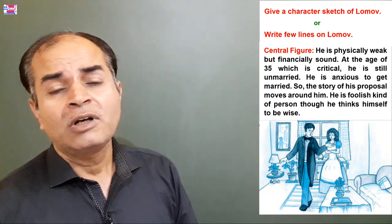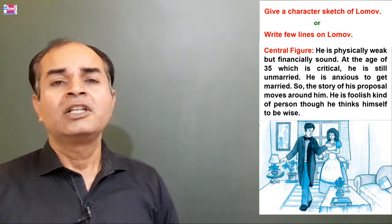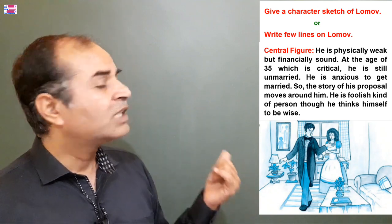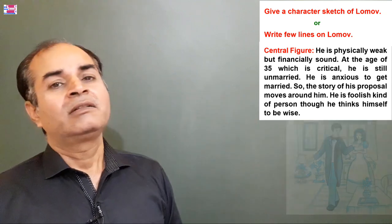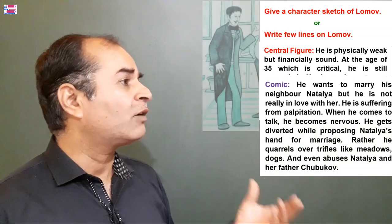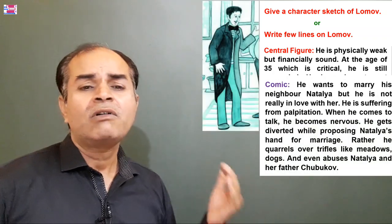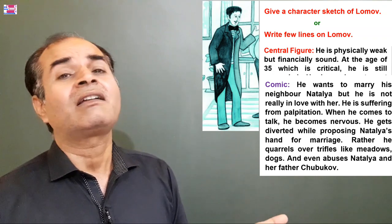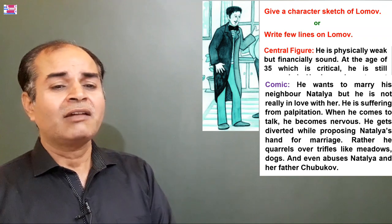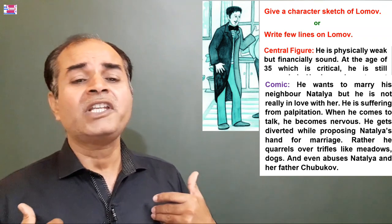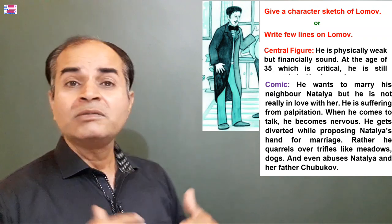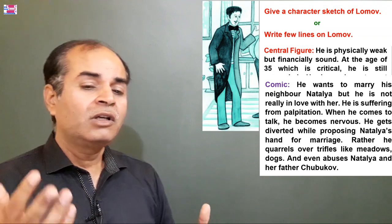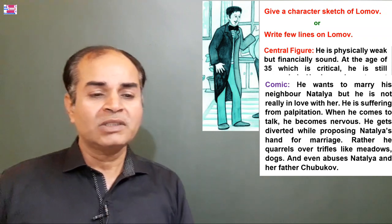As you have observed, he is a foolish kind of person, though he thinks himself to be wise. You can give him a comic character label. He wants to marry his neighbor Natalia, but he is not really in love with her — shadi to karni hai, pyaar nahi hai usse. He is suffering from palpitation; when he comes to talk he becomes nervous.